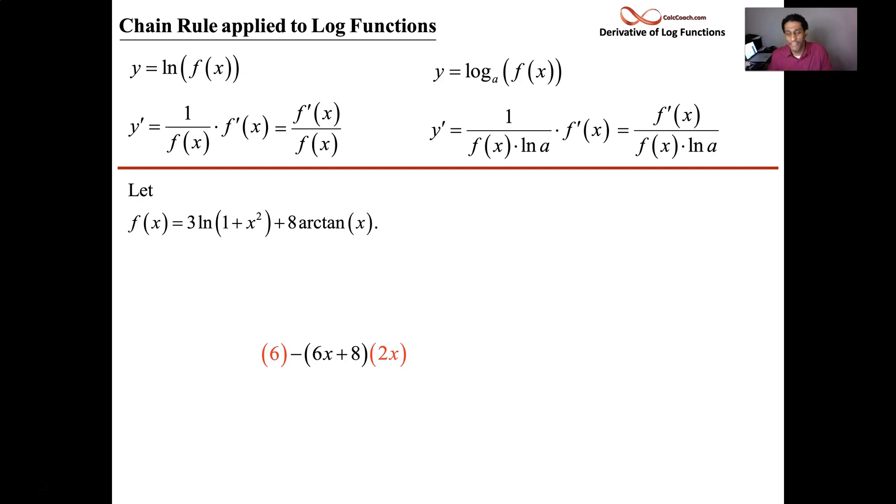According to what's above, keep the 3. We take the derivative of ln of f of x by doing f prime over f. The inside is 1 plus x squared. Its derivative is 2x. And that's going to be over the 1 plus x squared.